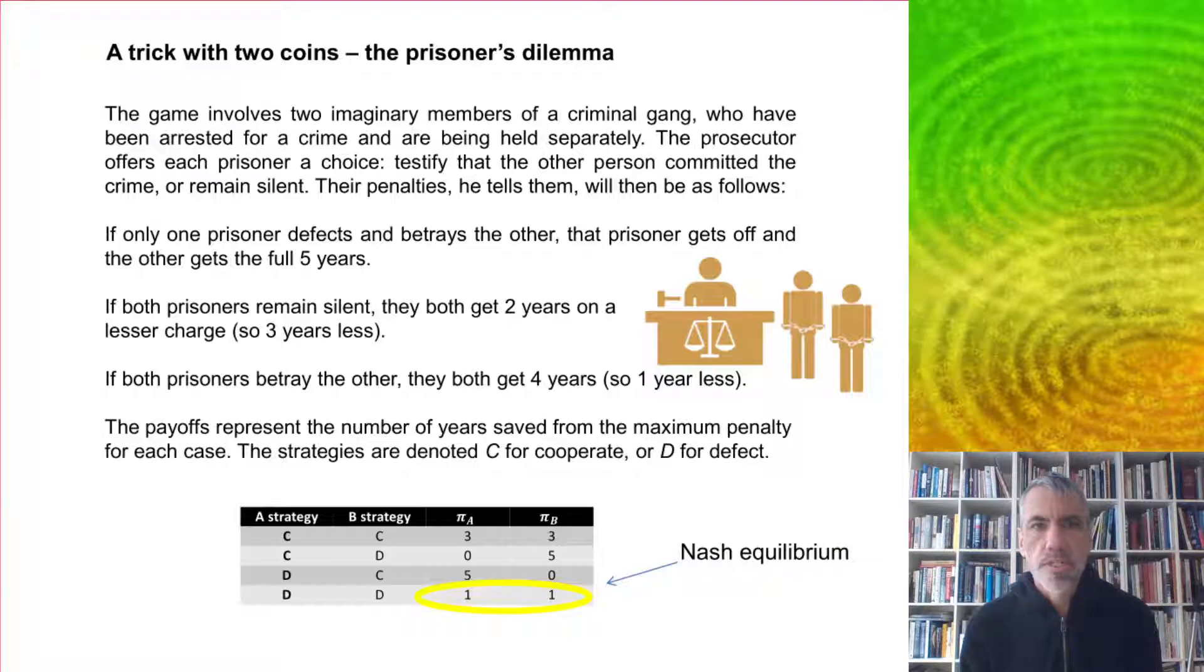If one prisoner defects and betrays the other, that prisoner gets off and the other gets the full five years. If both prisoners remain silent, they both get two years on a lesser charge, and if both prisoners betray the other, they both get four years.